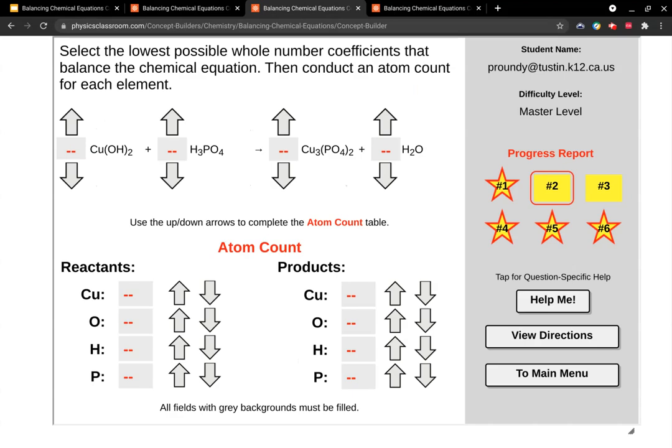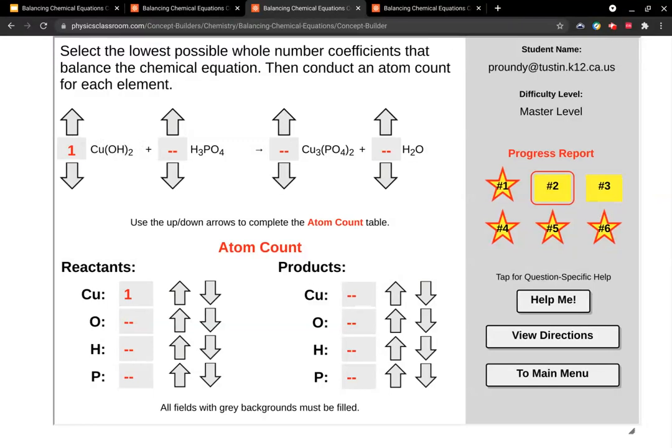On to the master level here. Now in the master level, you have to count the atoms yourself. So let's go ahead and do that. If we get one of each, well, let's start with one of these. So that means we have one copper here. And then we have some stuff inside of parentheses. So we have to look outside the parentheses. So this would be two oxygens and two hydrogens.